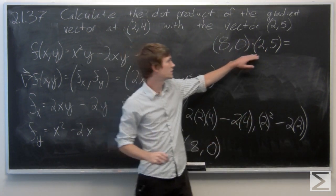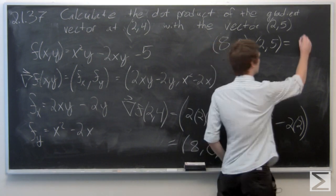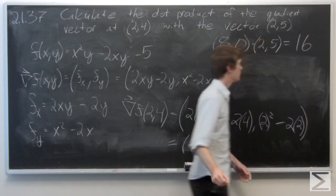We get 8 times 2 plus 0 times 5. It's just 16.